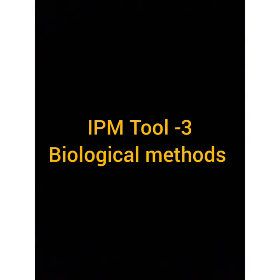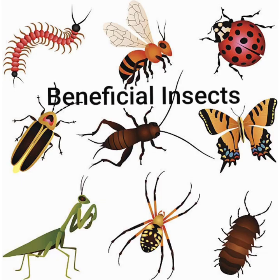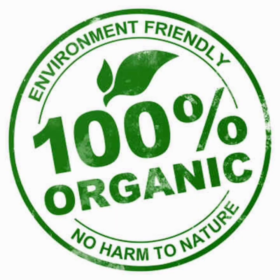The third important IPM tool is biological methods. Beneficial insects control 80 percent of pests, whereas chemical insecticides or pesticides control only 20 percent. While spraying chemical pesticides, these beneficial insects are also killed. So go organic — it keeps nature safe and causes no harm to natural predators.